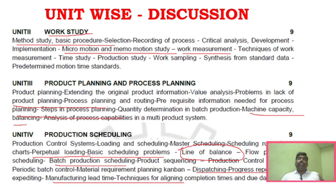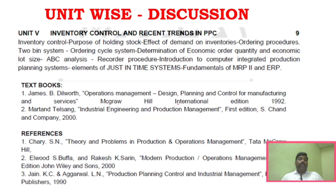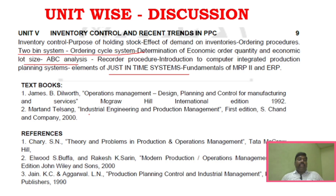Unit 5 covers the ordering system and ordering procedure — very important. ABC analysis is very important, and just-in-time analysis is also very important. A recommended reference book is Martin Telsang's Industrial Engineering and Production Management, which has a downloadable link and will be very useful.